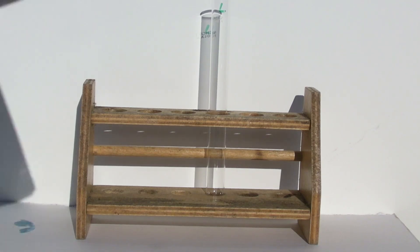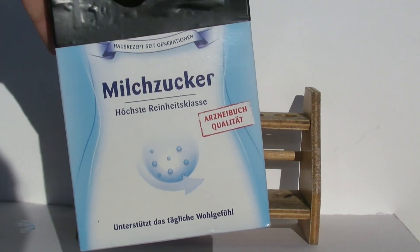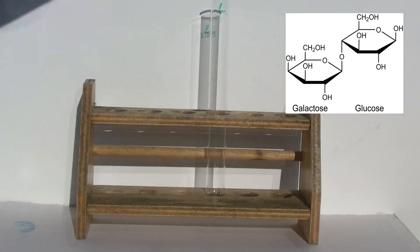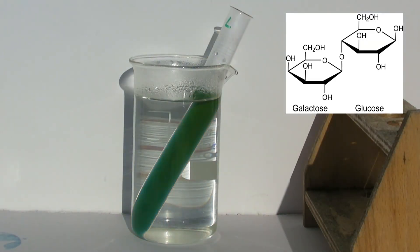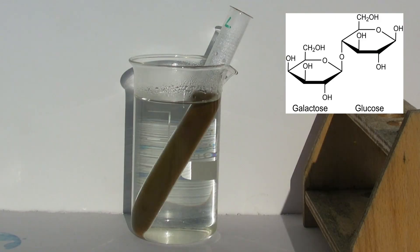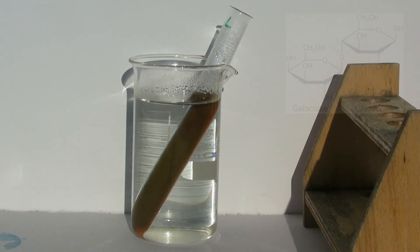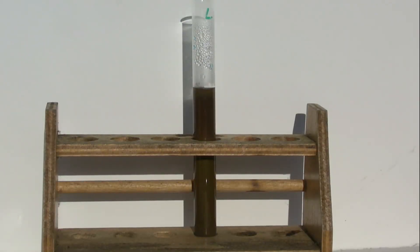There are also disaccharides that are reducing sugars. An example is lactose or milk sugar. Here, the ring of the glucose is able to open even though a glycosidic bond is present, so an aldehyde group is provided.